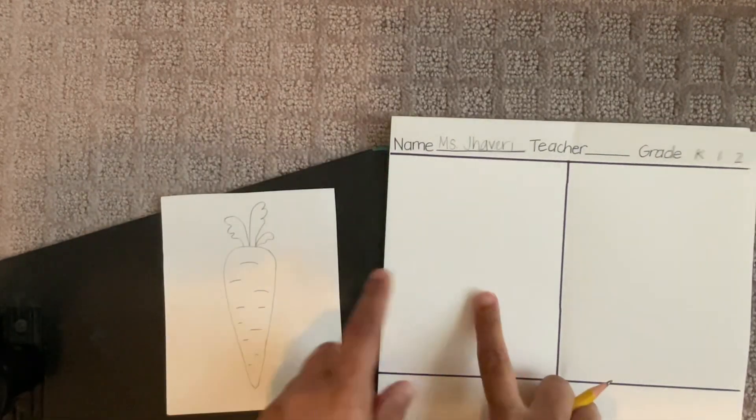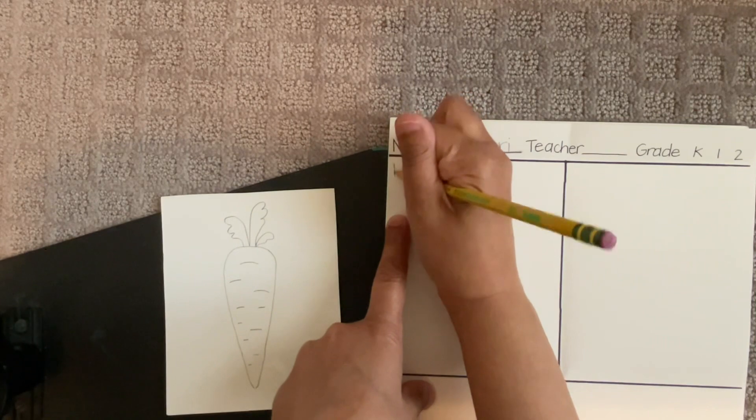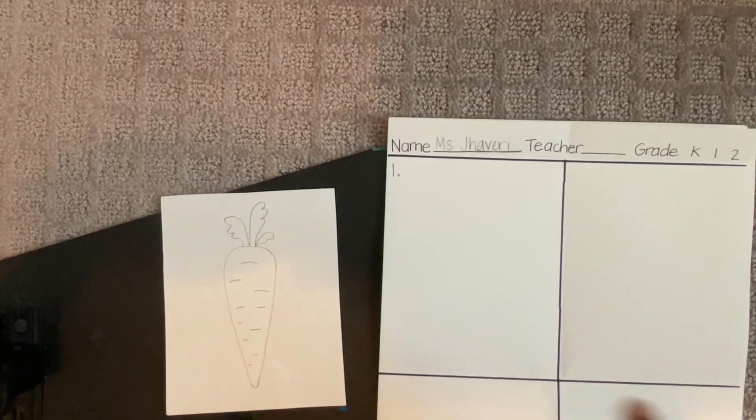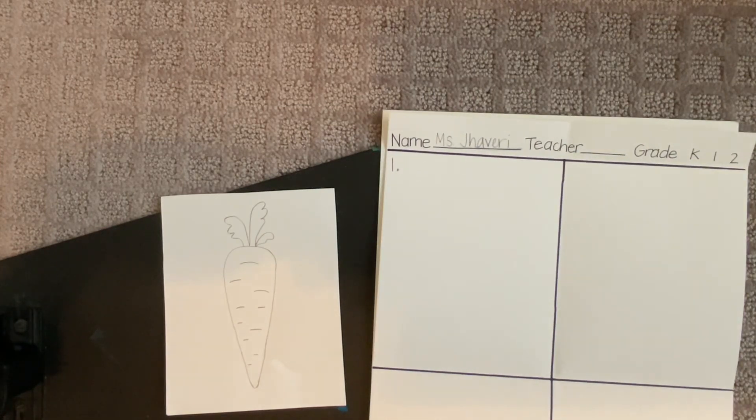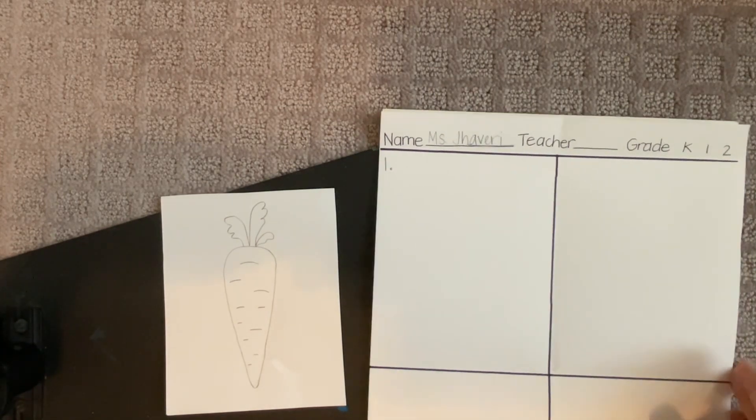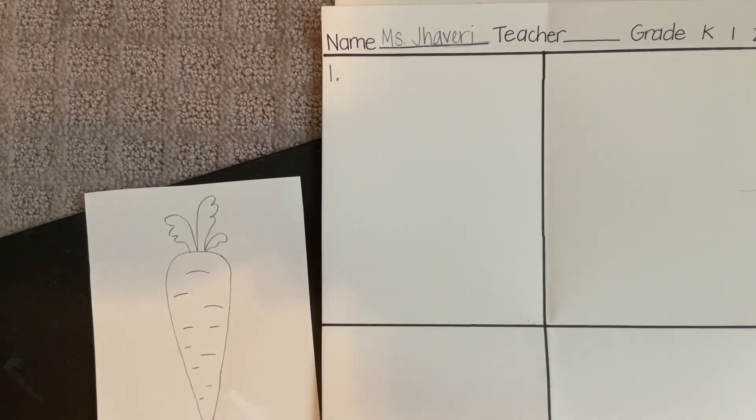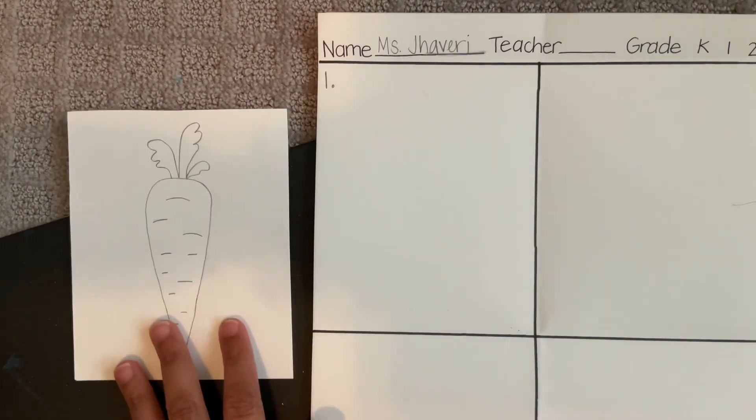In this top left box, you're going to draw your first attempt of the carrot. What I like to do is I like to make it easy the first time because we're not quite there yet in the skills.